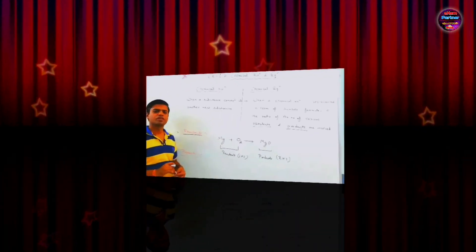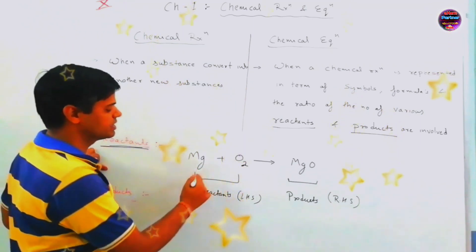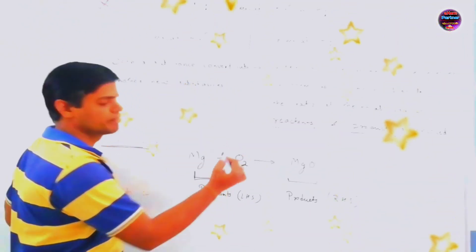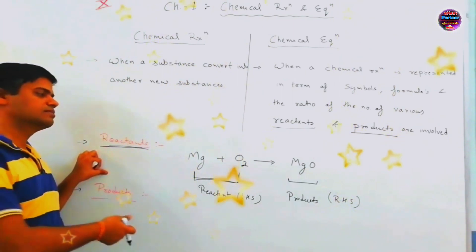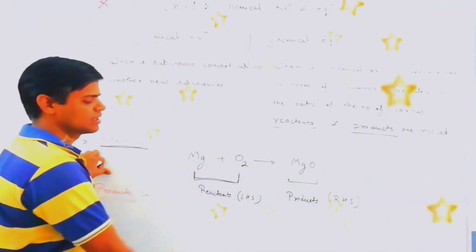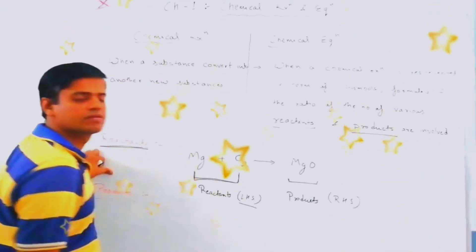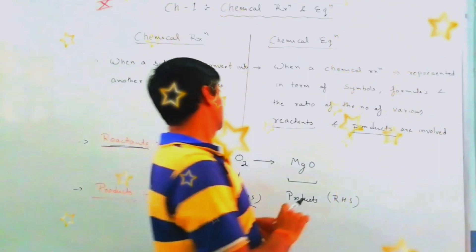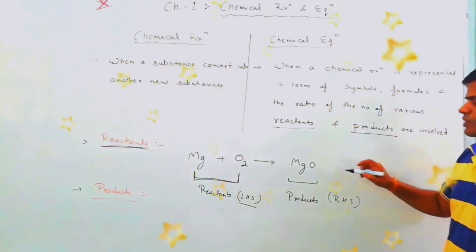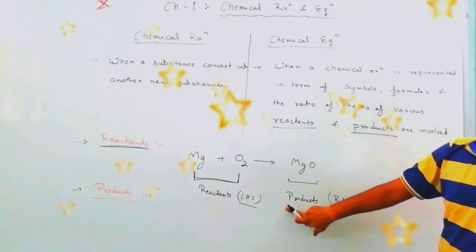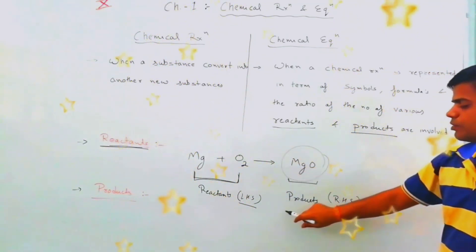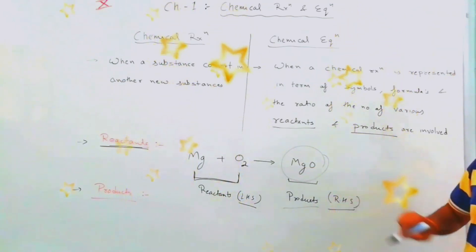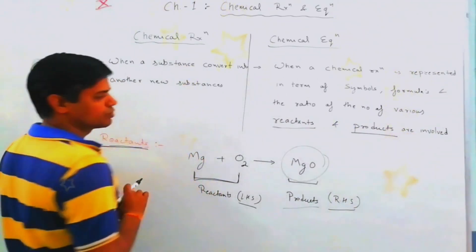Reactants. Reactants are always written on LHS side, left-hand side. And product, product means those substances which are formed after chemical reaction. Then, chemical reaction involves reactants and products. These are two definitions, these are important. Reactants and product.